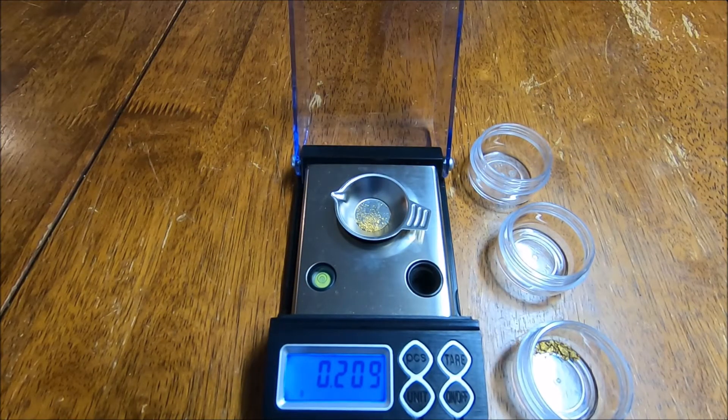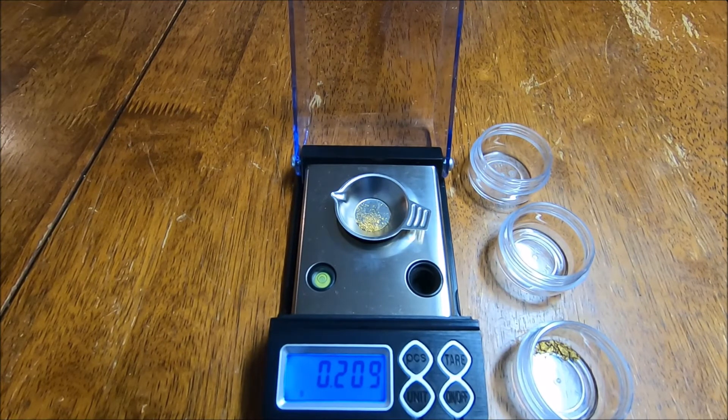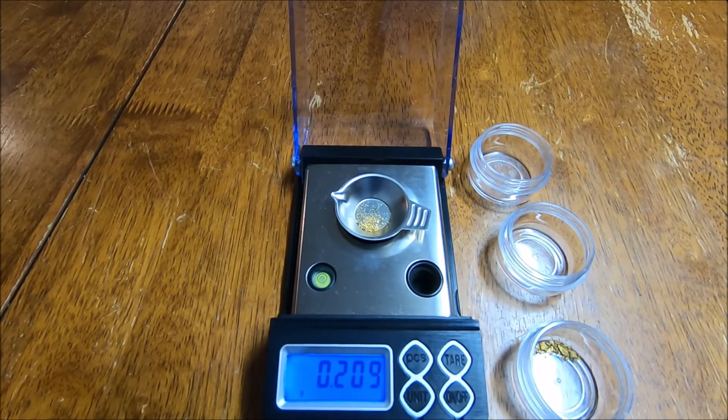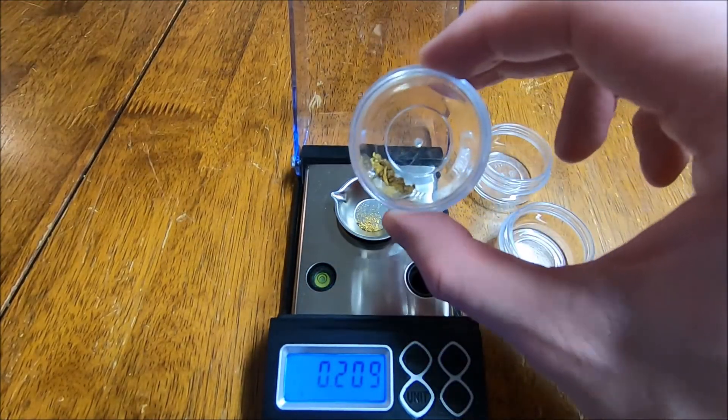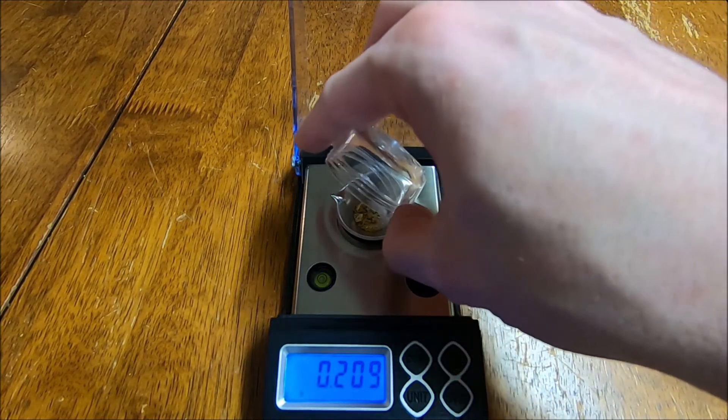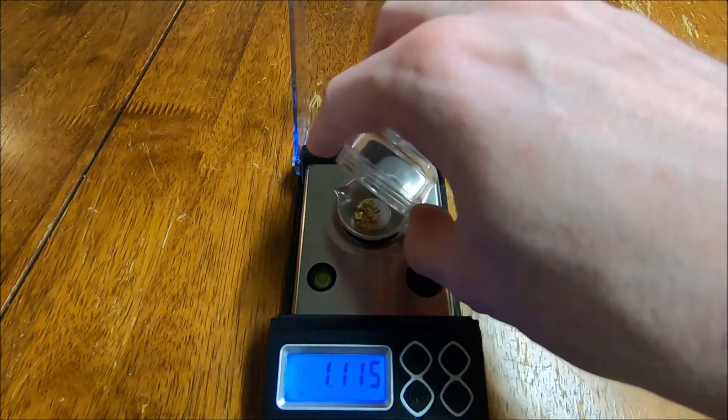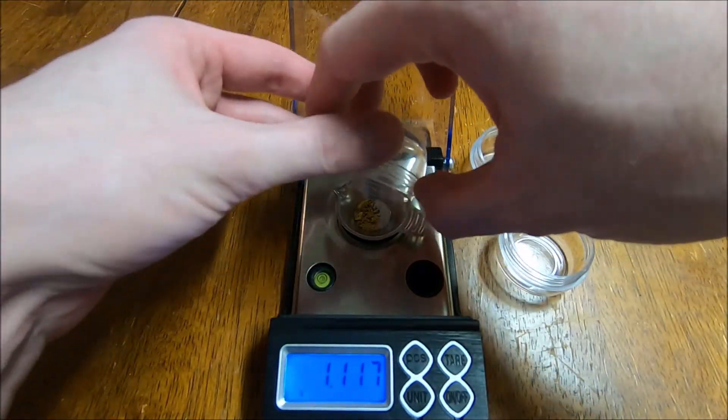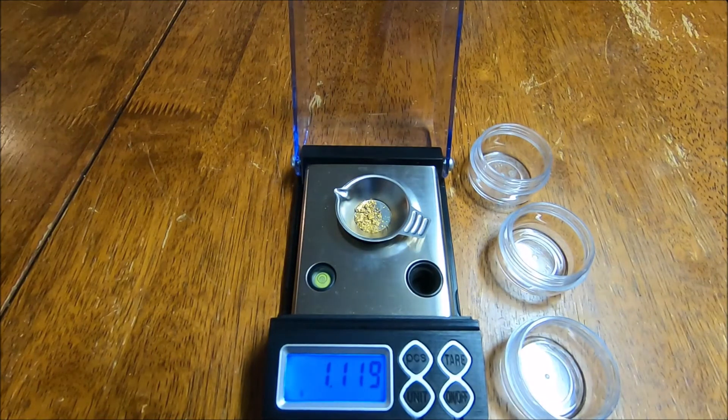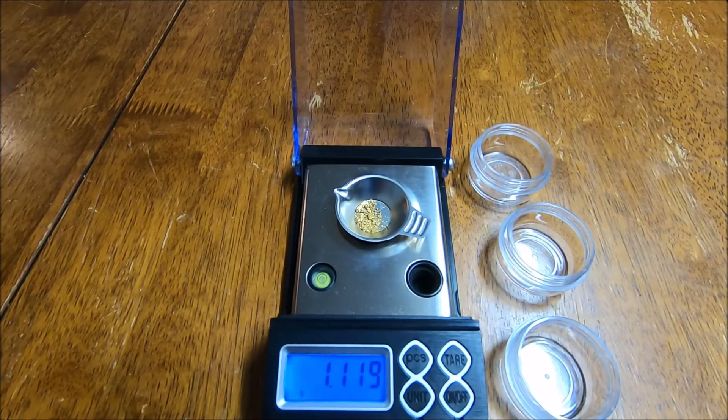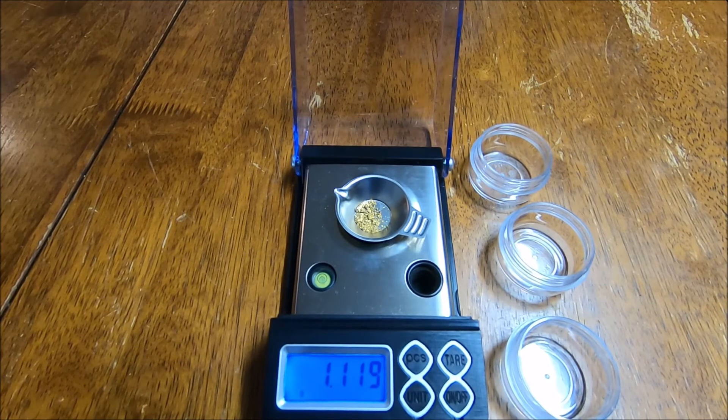So that amount of gold was roughly, what, .15? And then we'll dump the big stuff in. .119. So we have a little bit over a gram of gold.